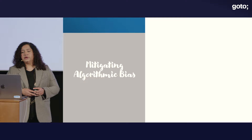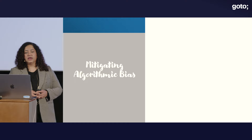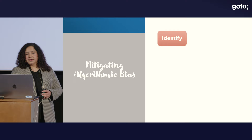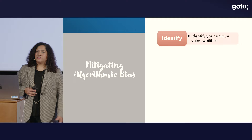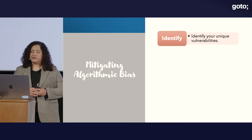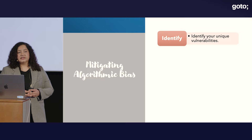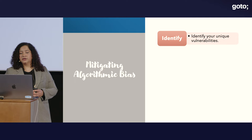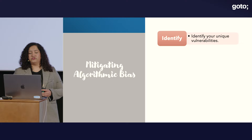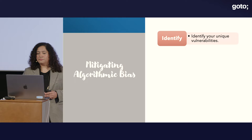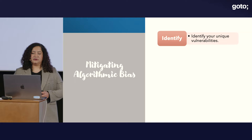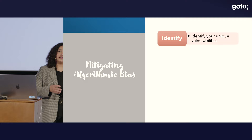Despite those challenges, fortunately there are certain steps we can take to mitigate algorithmic bias. The first is identifying your unique vulnerabilities — depending on the organization and situation, there could be different vulnerabilities. For example, banks, retailers, and utilities face different kinds of risk from potential AI bias. You need to determine your own unique vulnerabilities and challenges, then calculate the financial, operational, and reputational risks associated with that bias in your company, and prioritize your focus accordingly.